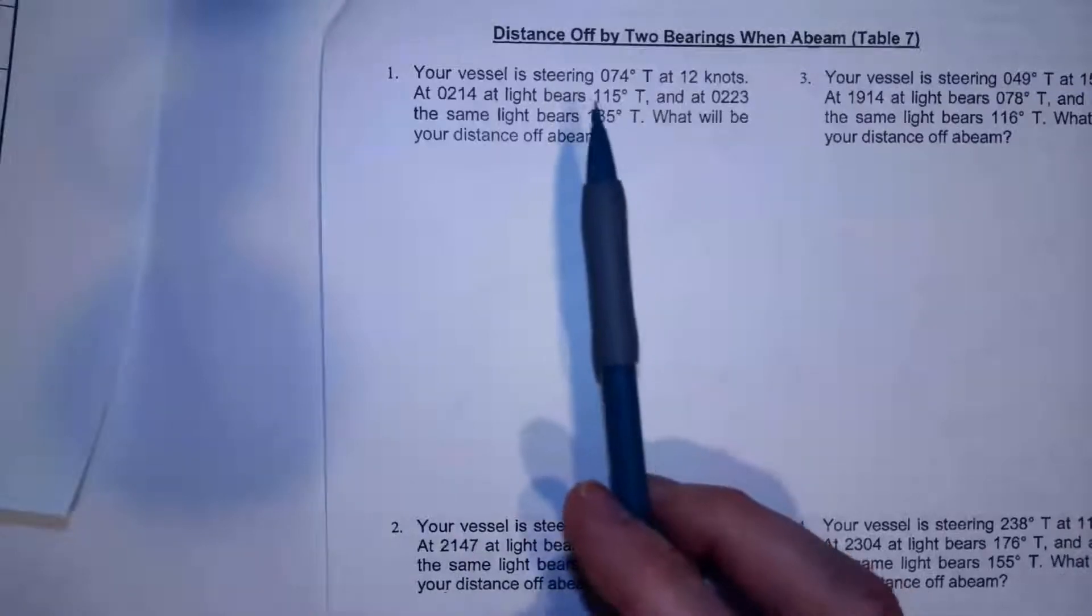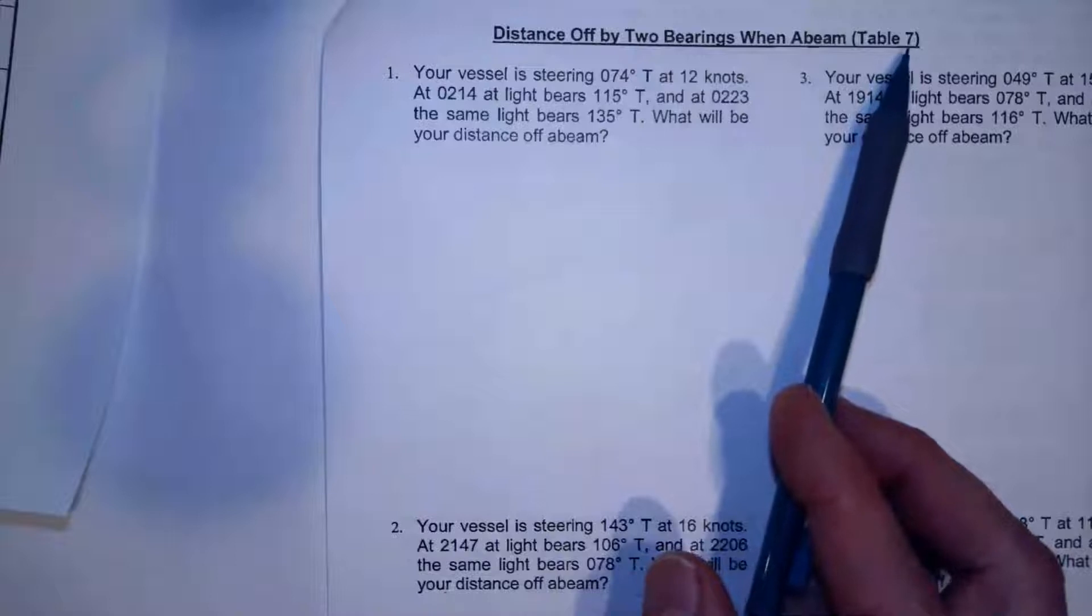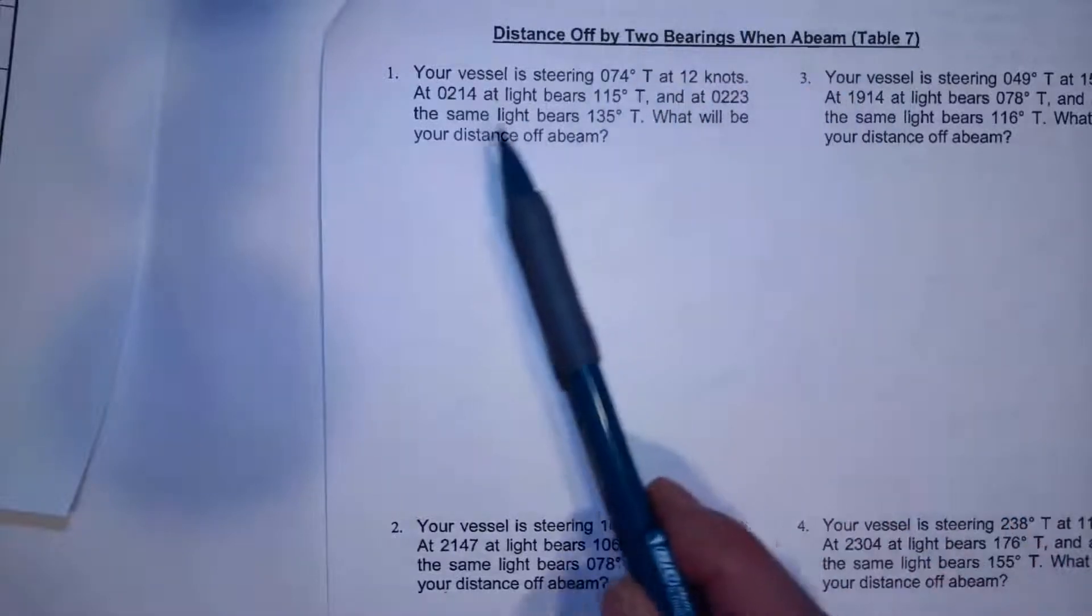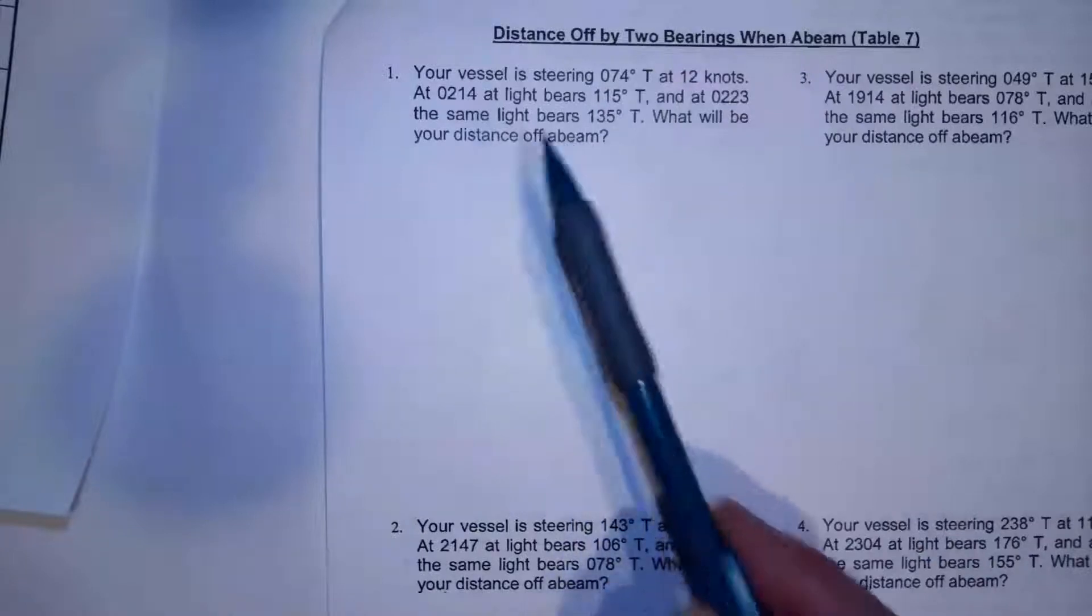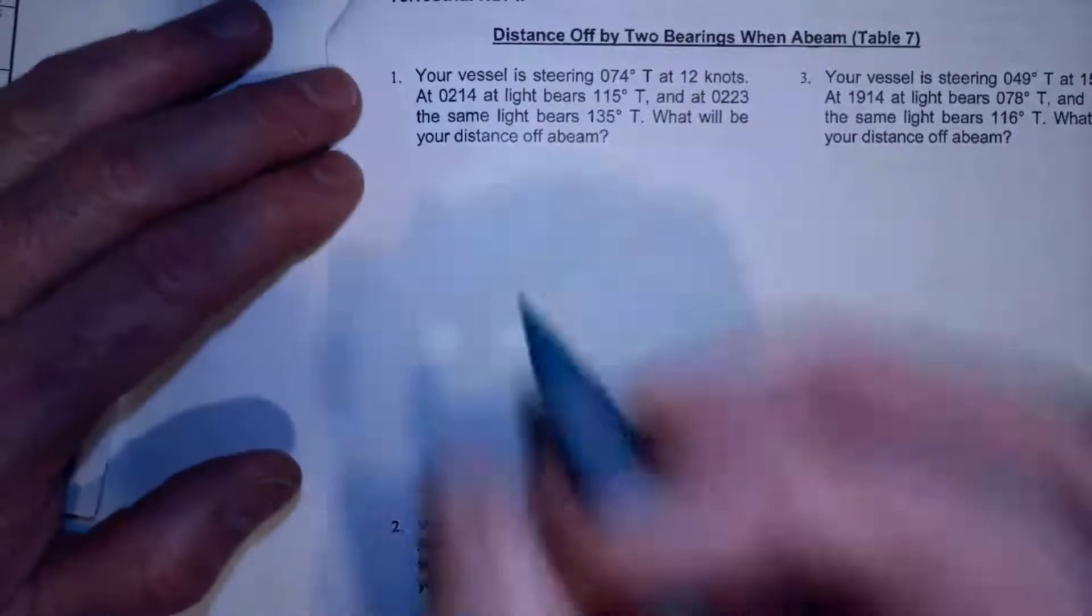So in this video we're going to do another distance by two bearing problem using Table 7 from Bowditch 2, 1981. In this one though we're going to do a distance when abeam. So I'm going to set my calculator up again.